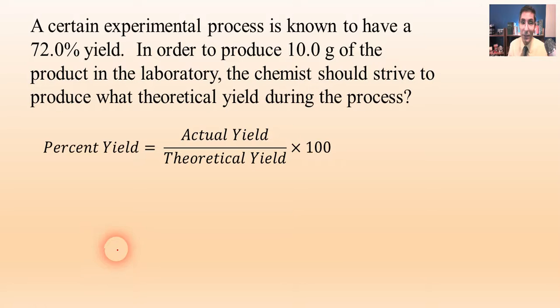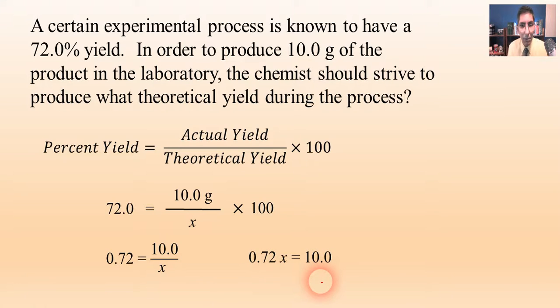We're going to use the same equation here. This time we know what the percent yield is. It's the 72.0. So I can plug that in right there to that part of the equation. We also know what the actual yield is going to be. It tells us we're going to be making 10.0 grams in reality. So that goes on top here. And we don't know what the theoretical yield is. That's what the question's asking. So that's going to be our unknown, our x. And of course, we have times 100 in here. So this is just an algebra problem. At this point, I'm going to divide both sides by 100 and we're going to get 0.72 equals 10 divided by x. Let's cross multiply to make this problem a little bit easier to solve. So we have 0.72x equals 10. And now I can divide both sides by 0.72. I get that x equals 13.9 grams. So I should be shooting for 13.9 grams so I can really make the 10 grams.